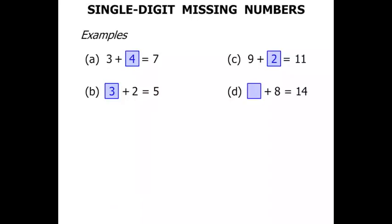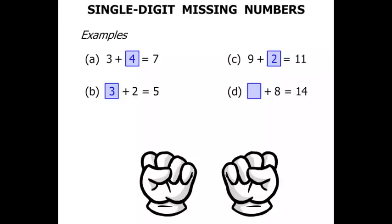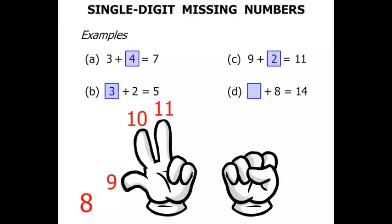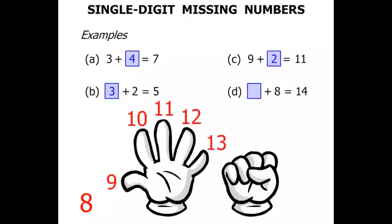The next one: something plus 8 equals 14. Well we might need 2 hands for this one. So something plus 8 equals 14. Let's start with the 8 and we've got to get to 14. So we're thinking 8, 9, 10, 11, 12, 13, 14. So we needed the other hand that time. How many fingers up? 6 altogether. So 6 is our answer.